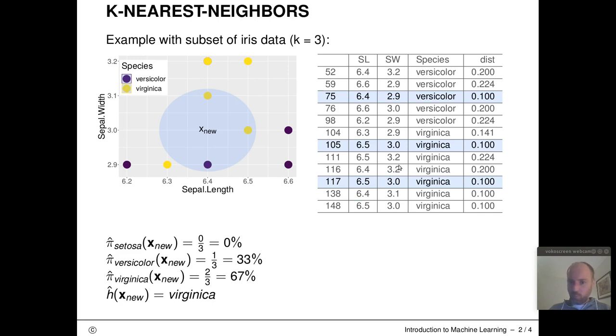So our estimated posterior probability for setosa for point x new would be zero. We have one object of class versicolor. So posterior probability would be one third. And we have two occurrences of class virginica. So posterior probability is two thirds.